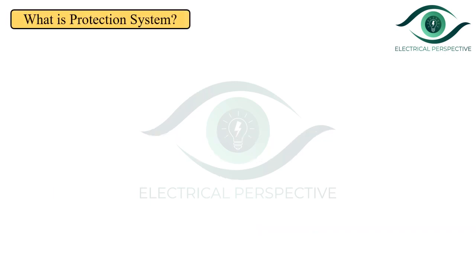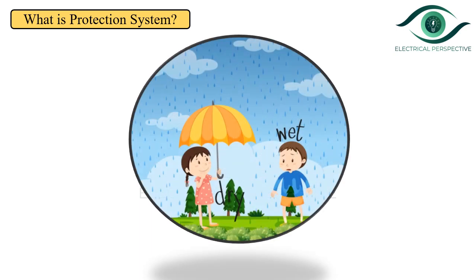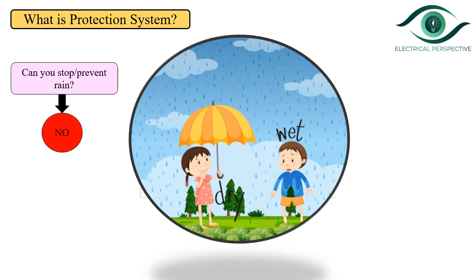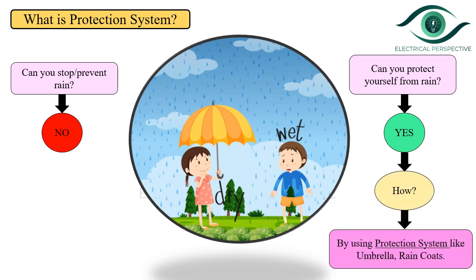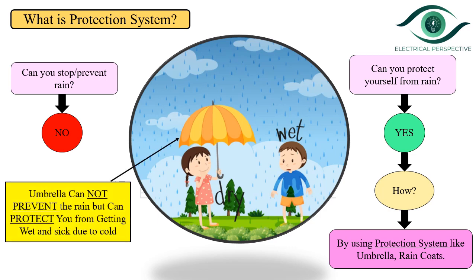The important question is: what exactly is a protection system? To answer this, I am using this figure. My first question is: can you stop or prevent the rain? The answer is obviously no, because rain is not in someone's hand. But the second question is: can you protect yourself from the rain — from getting wet? The answer is yes. How? By using the protection system like an umbrella or rain coats. So, the umbrella is the protection system which cannot prevent the rain but can protect you from getting wet and sick due to cold. What exactly is the protection system doing? It is reducing or minimizing the adverse effects of rain on your body by protecting you from getting wet.